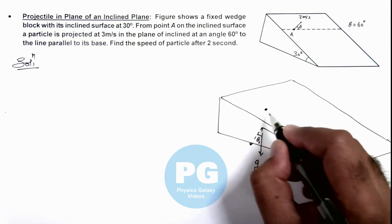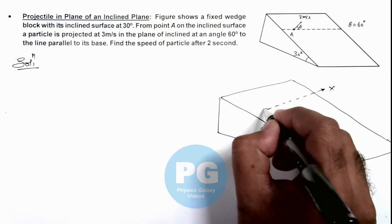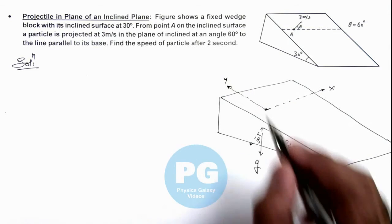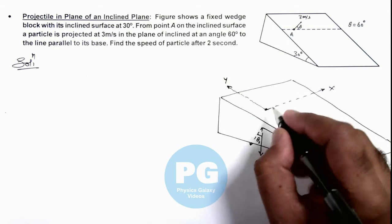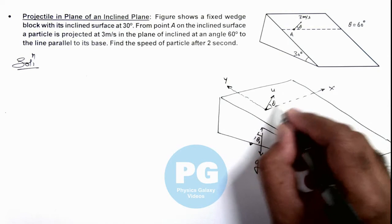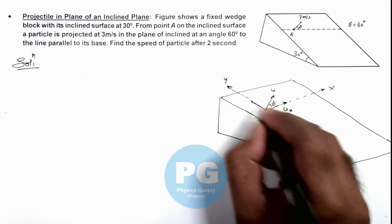From this point A, if we take this direction as our x axis and along the line of greatest slope on inclined if this direction is y axis, the particle is projected with the speed u at an angle theta. So it'll have 2 components of velocities, ux and uy.